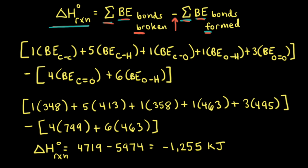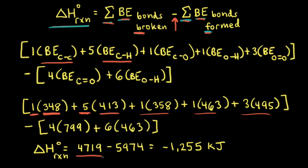The next step is to look up the bond enthalpies of all these different bonds. For example, the bond enthalpy for a carbon-carbon single bond is about 348 kilojoules per mole — you might see a different value in a different textbook, but we'll go with 348. The carbon-hydrogen single bond is about 413 kilojoules per mole, multiplied by five. Continuing with all remaining bonds broken, we get a total of positive 4,719 kilojoules.